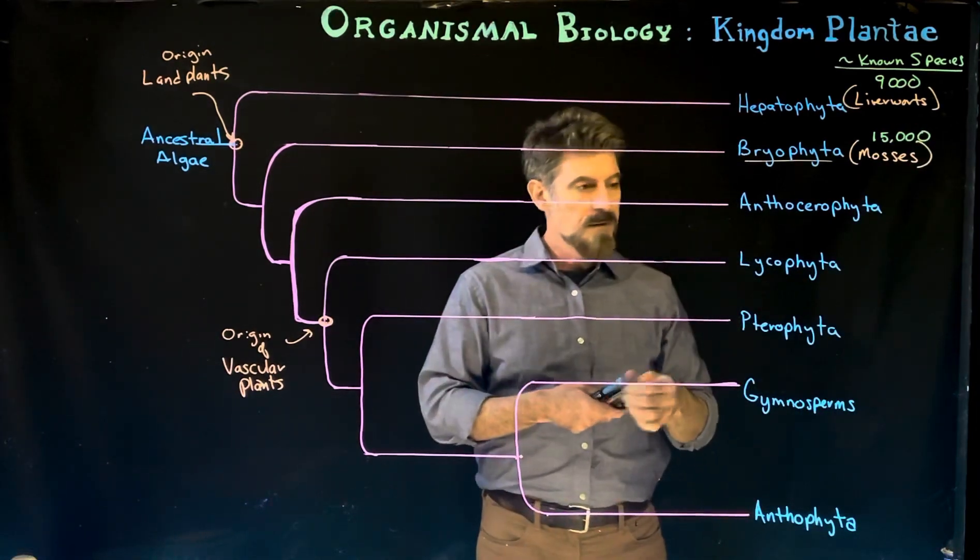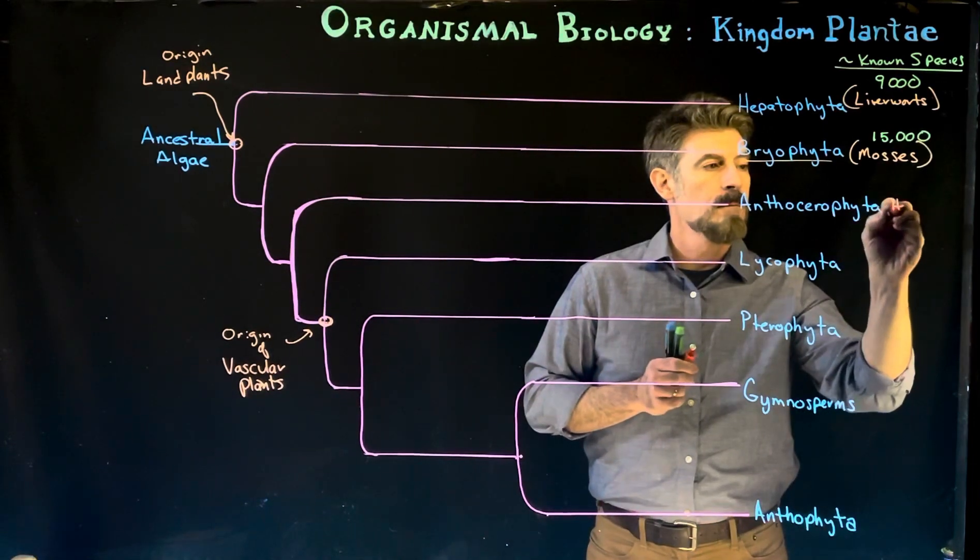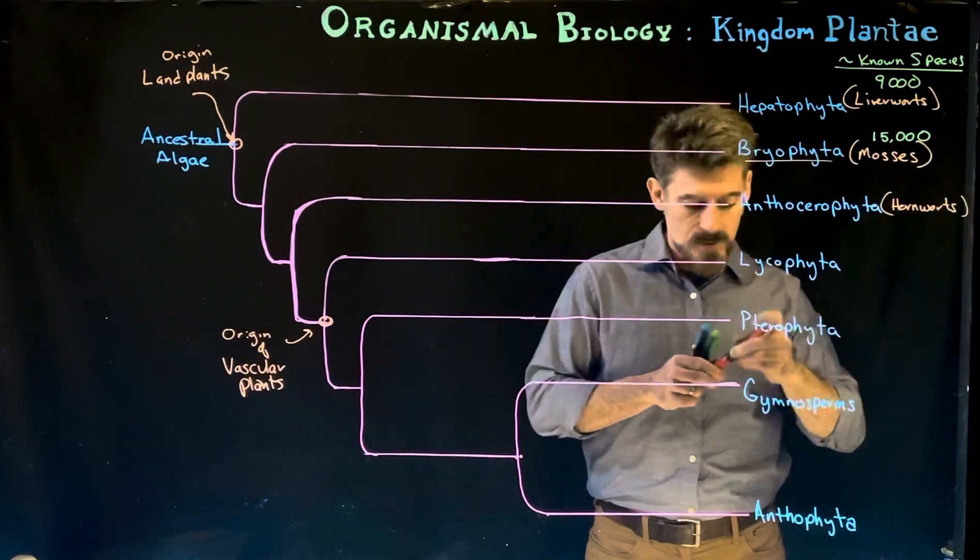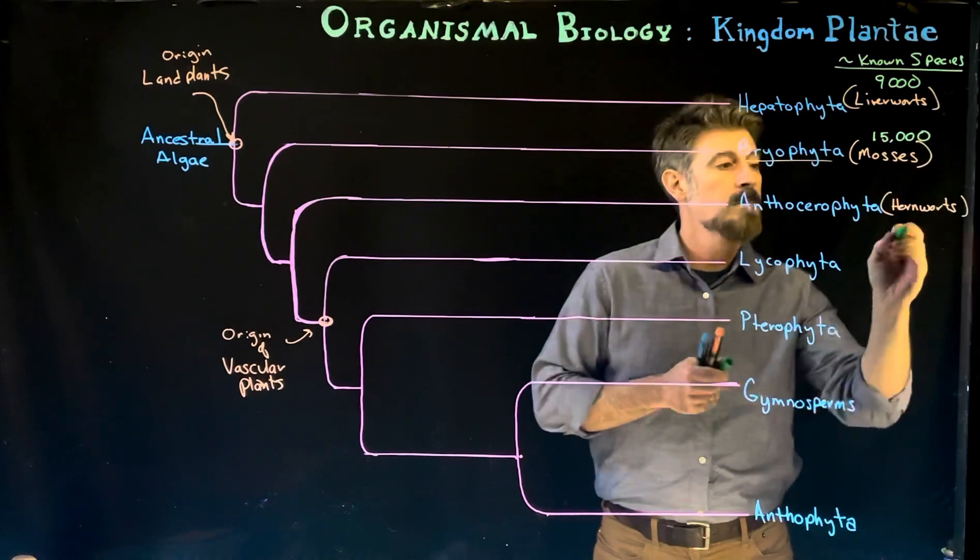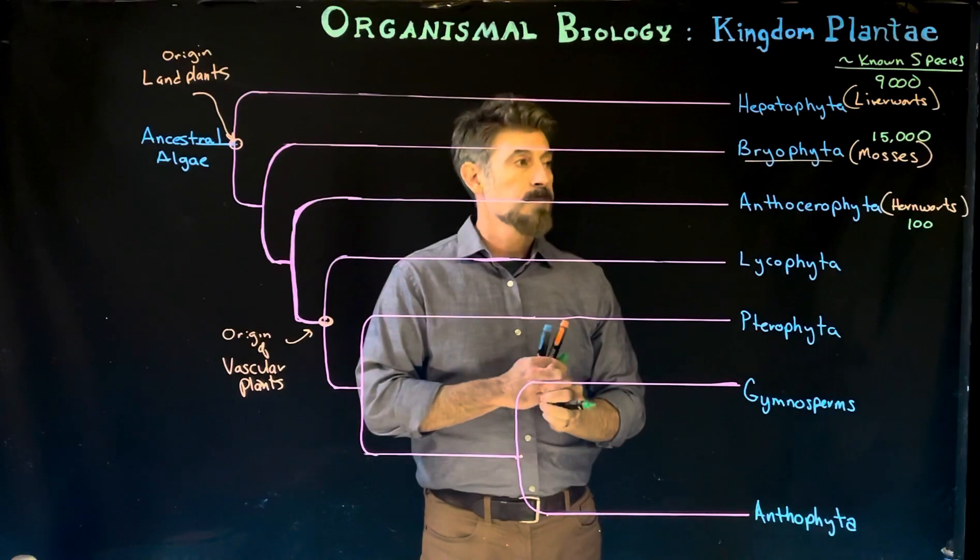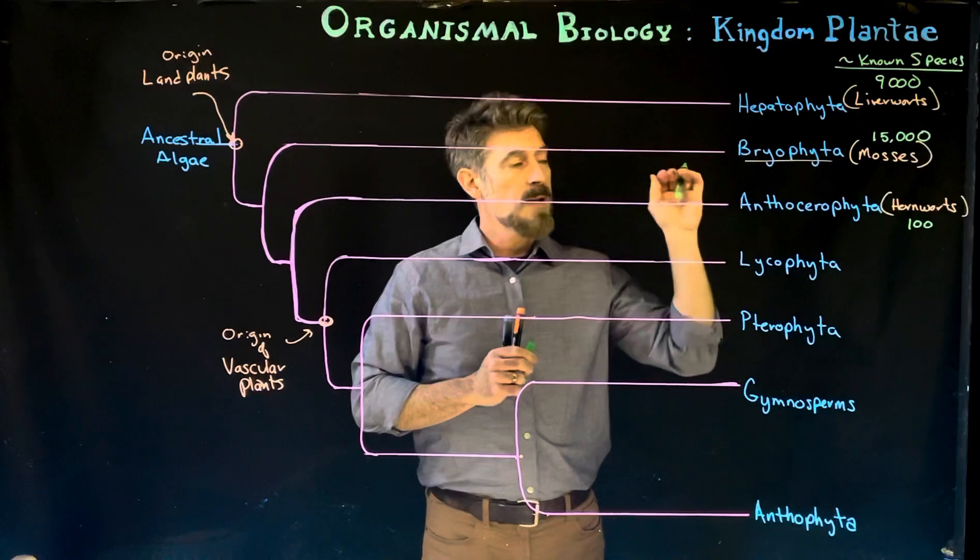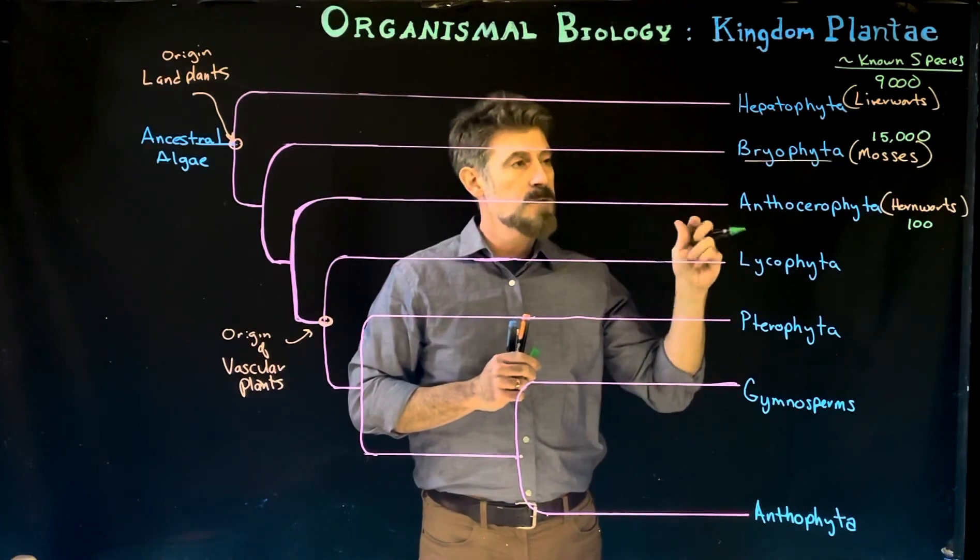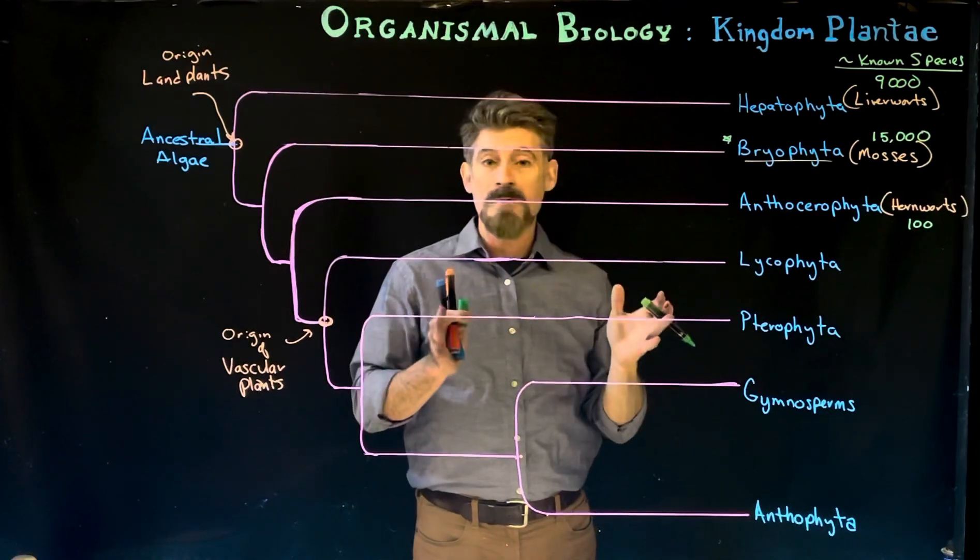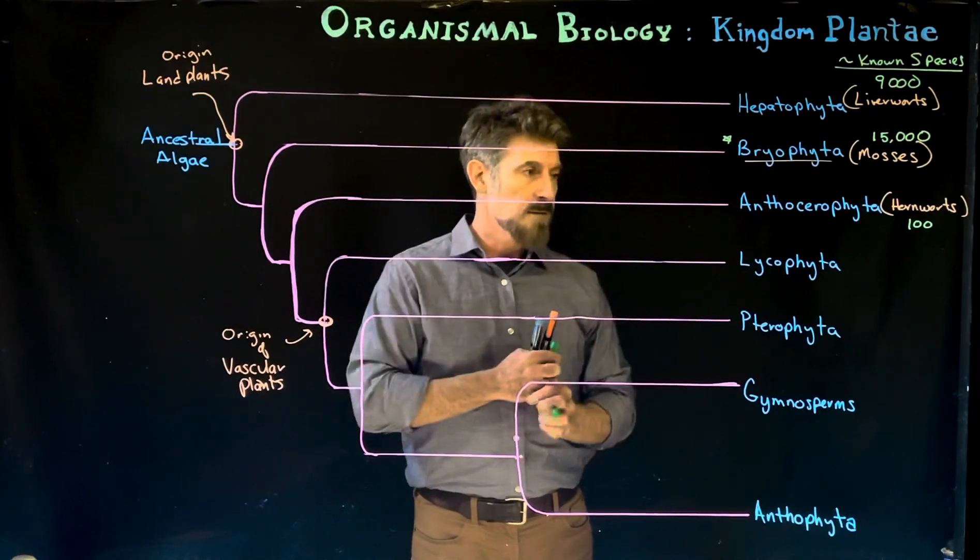And the Anthocerophyta is a group known as hornworts. They're a much smaller group with only about a hundred known species. So those are the names of the groups which are considered the non-vascular plants: the liverworts, mosses, and hornworts. Of those, we are going to focus in on the bryophytes as the next lecture following this one, their characteristics, traits, and their life cycles.